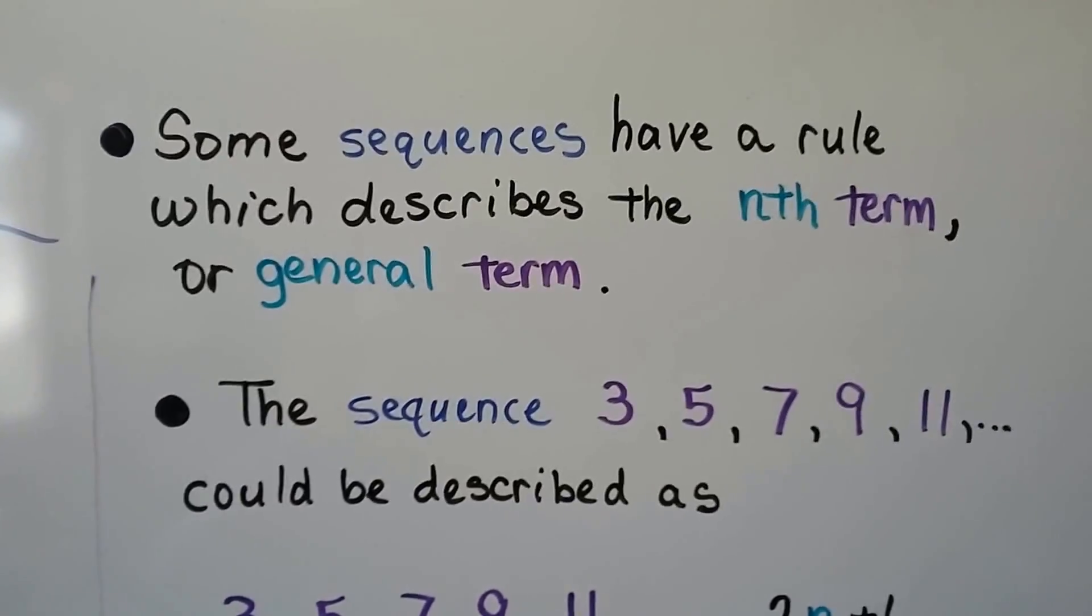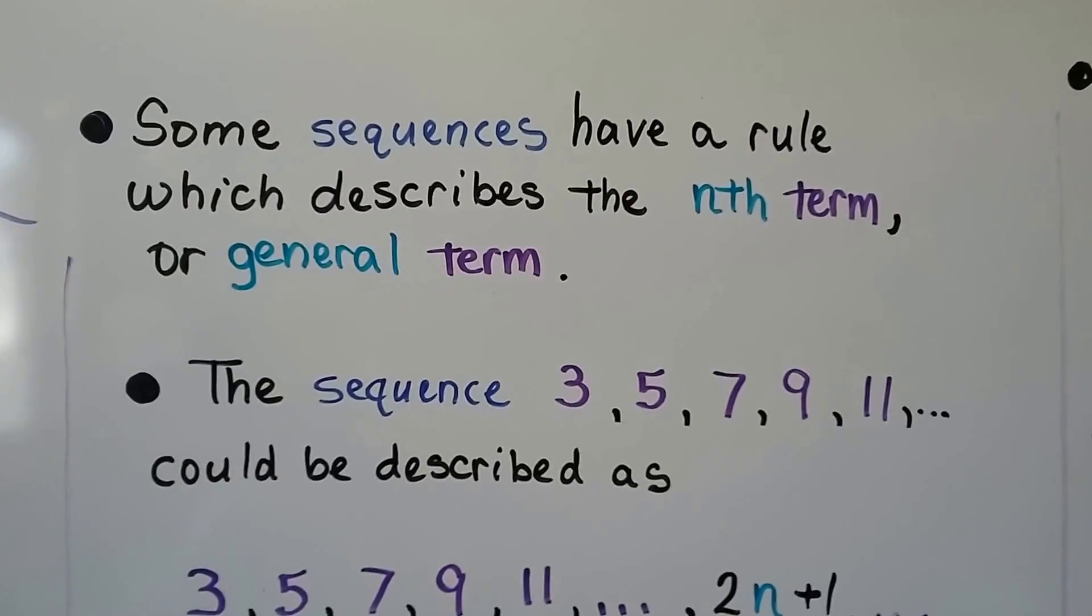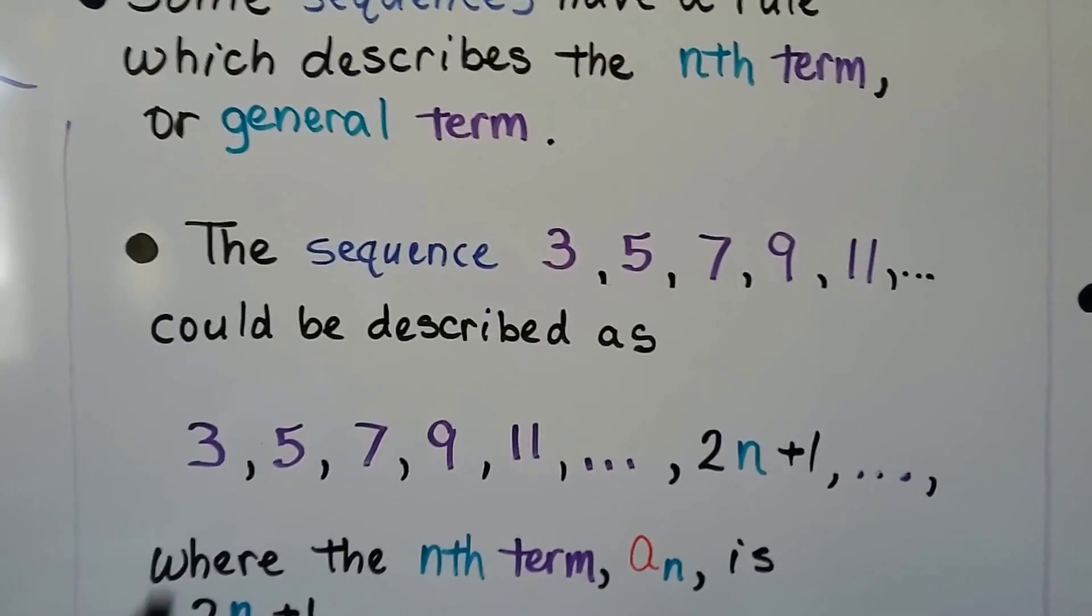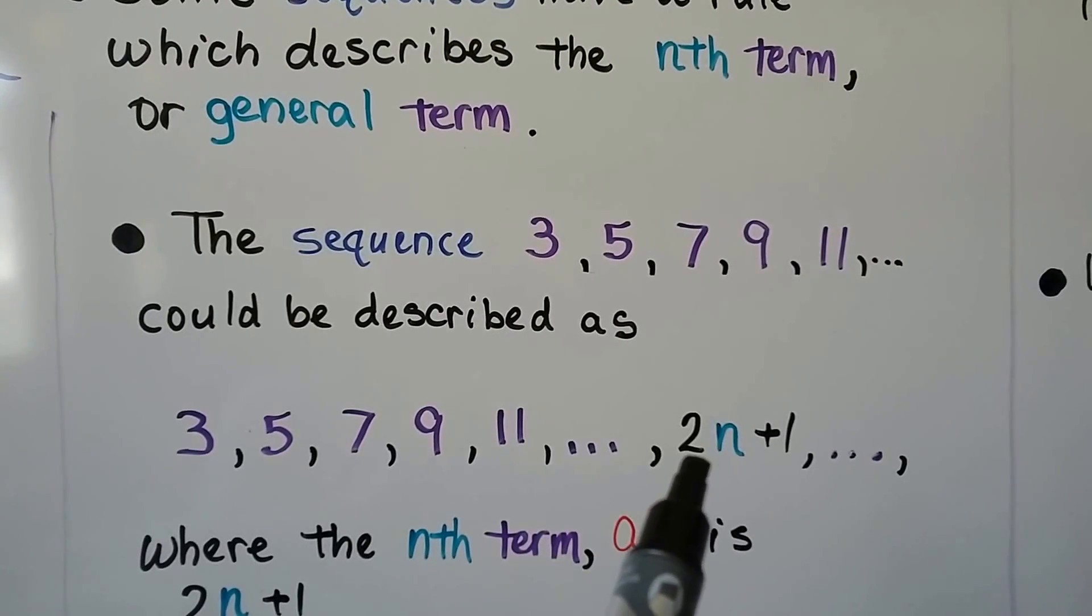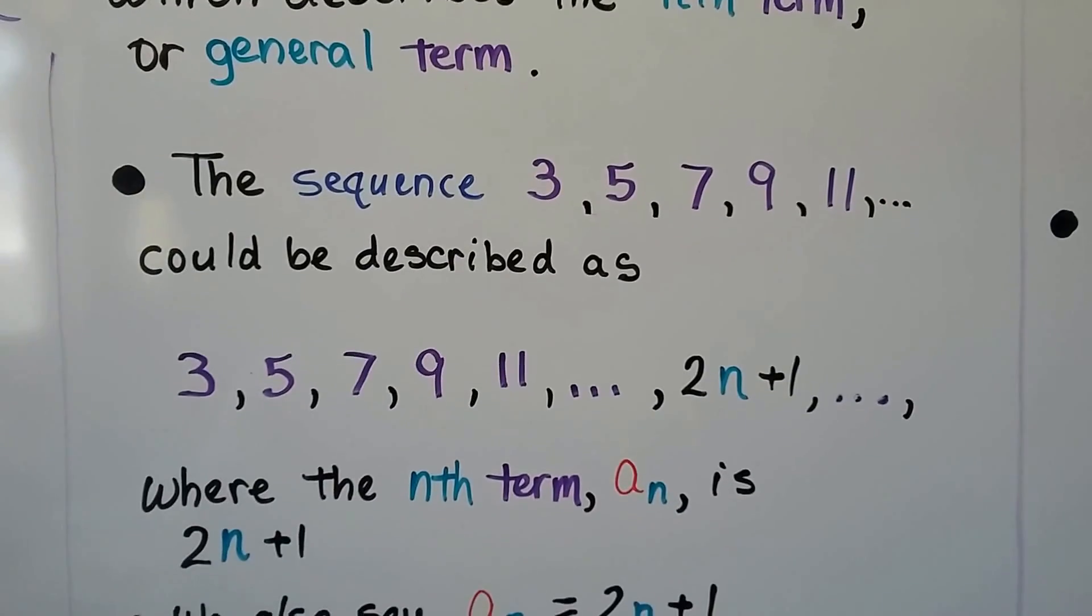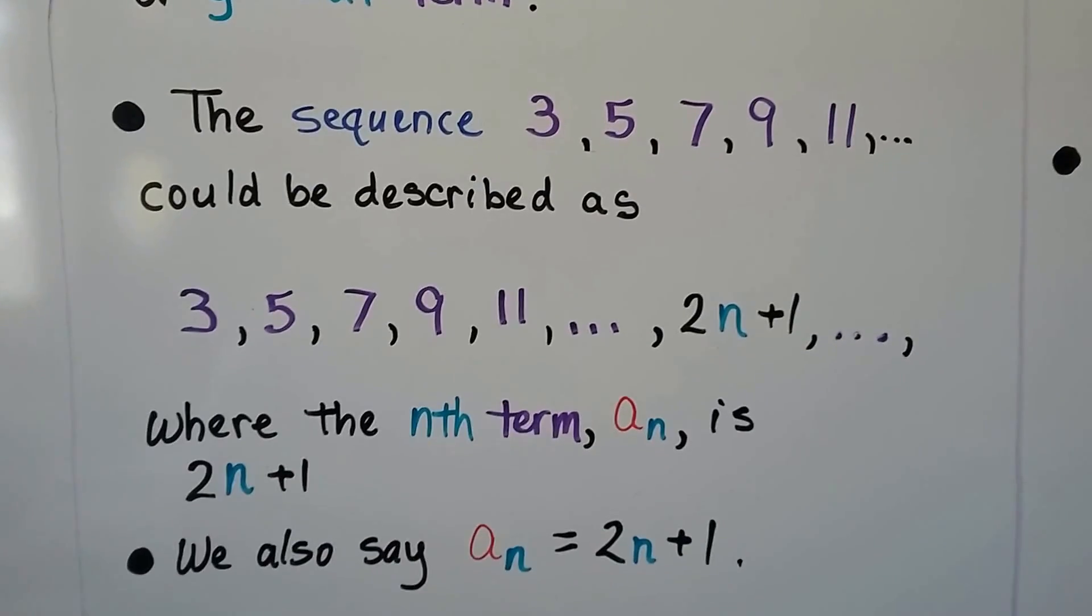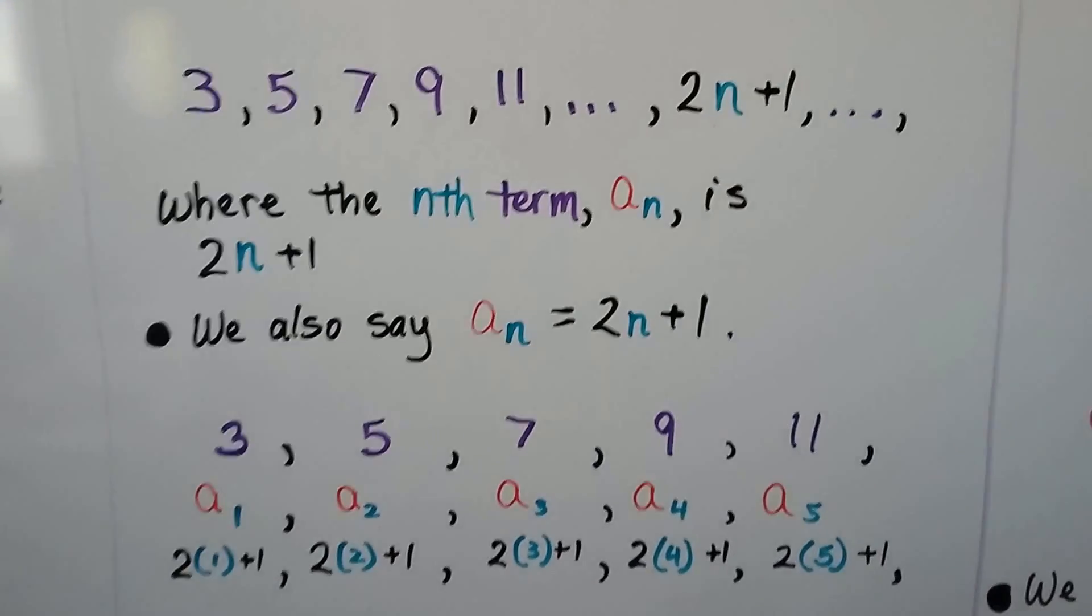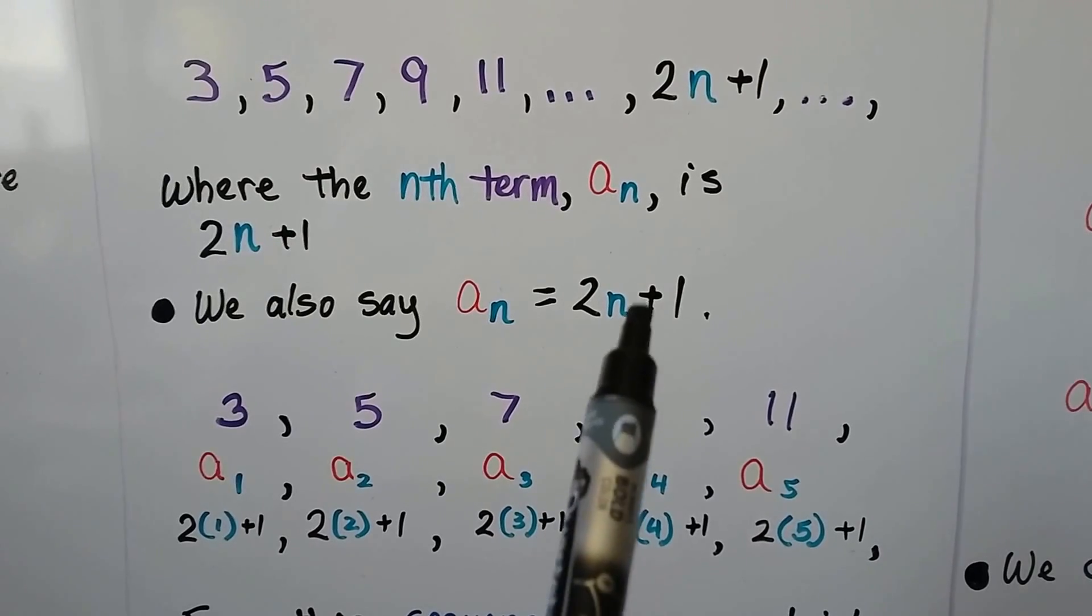Some sequences have a rule which describes the nth term, or general term. The sequence 3, 5, 7, 9, 11, and so on could be described as 3, 5, 7, 9, 11, and we have our ellipses here, and then 2n plus 1. We know it's going up by 2. The nth term, a sub n, is 2n plus 1. That's our rule, 2n plus 1. We also say a sub n is equal to 2n plus 1.